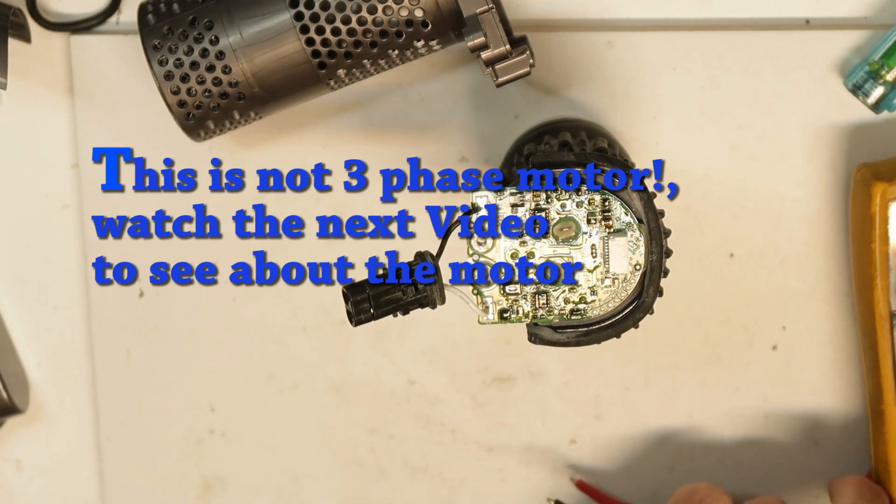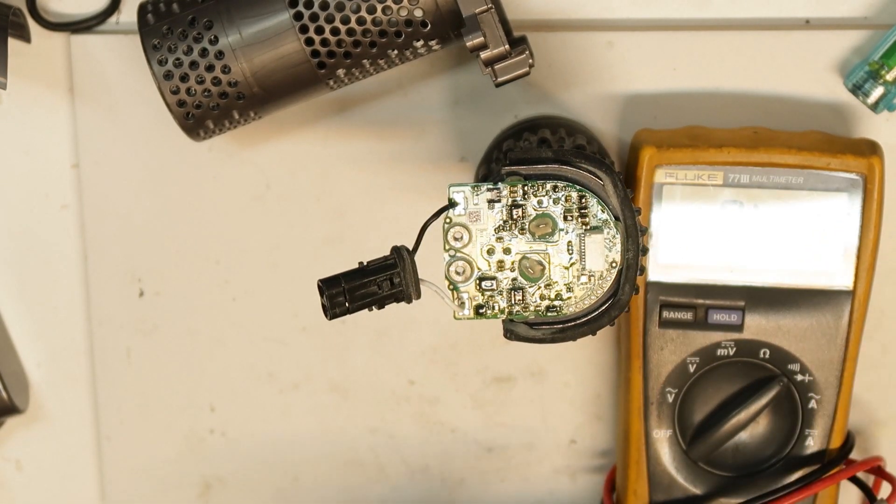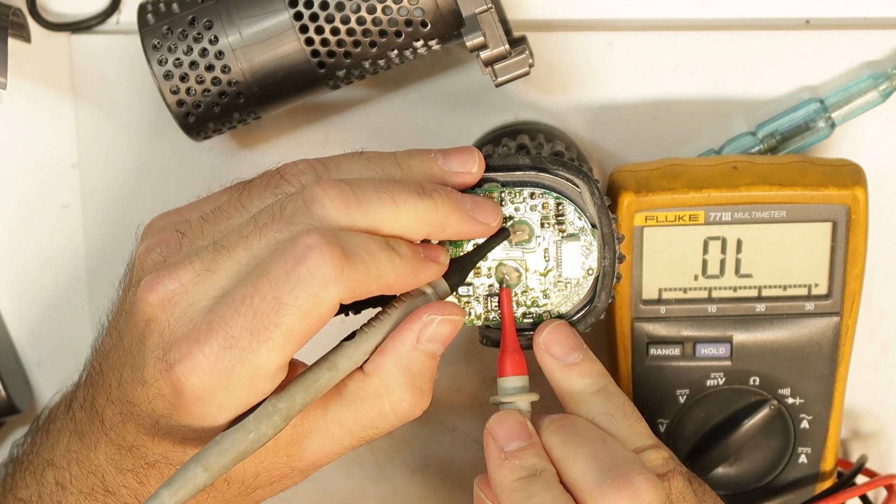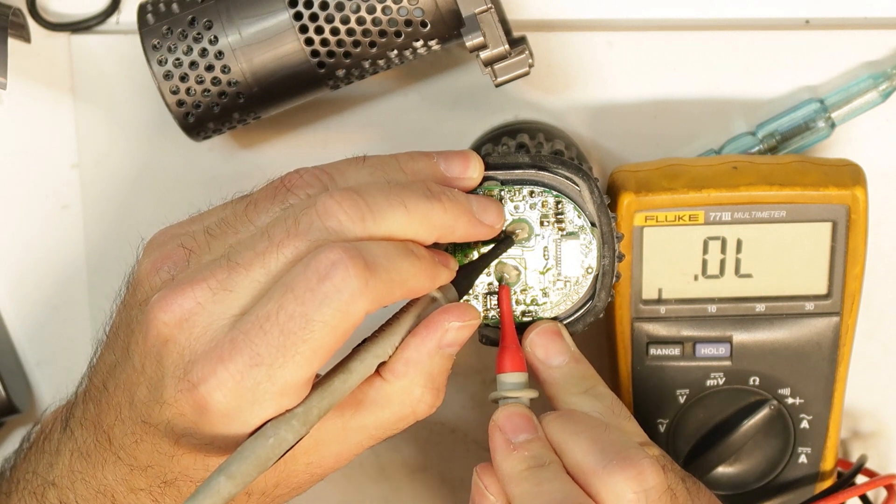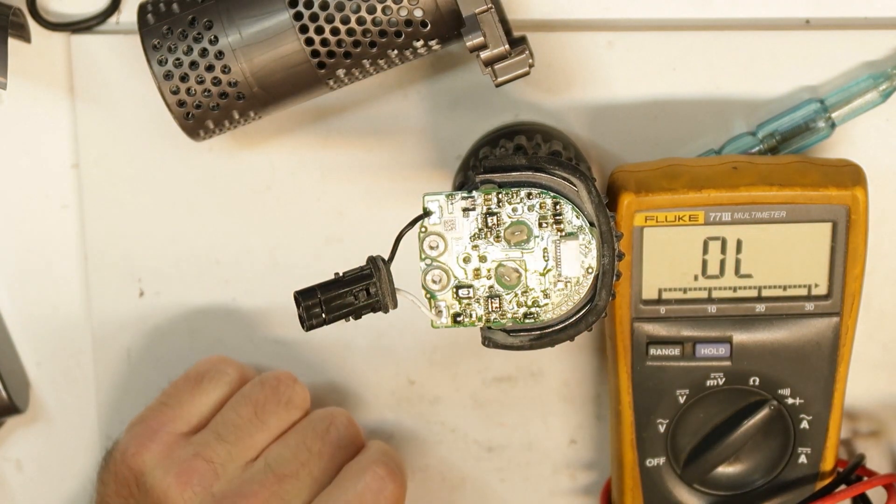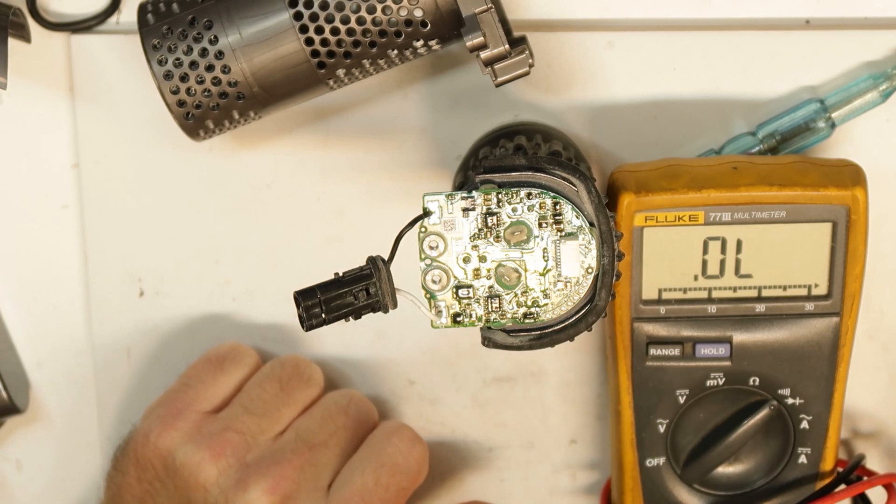Let's check that these are coils. I'm almost sure it should be a coil. If it's shorter, so it is a coil, of course. Yeah, so these are two coils of the motor and there should be another one.